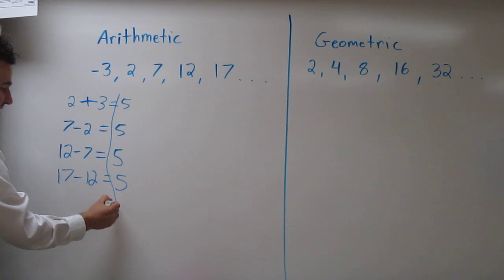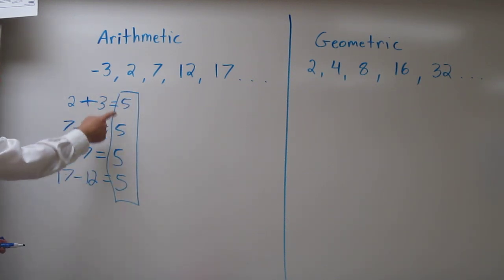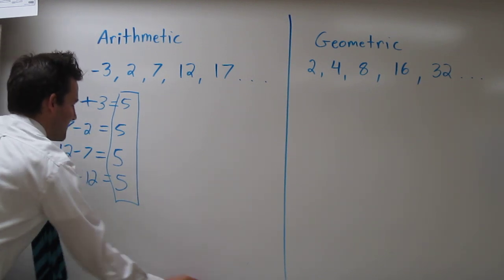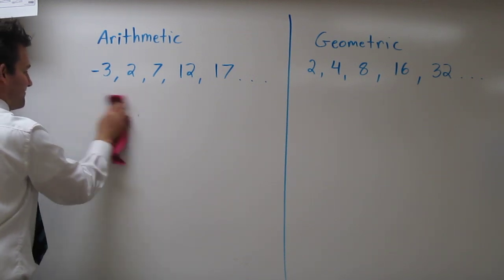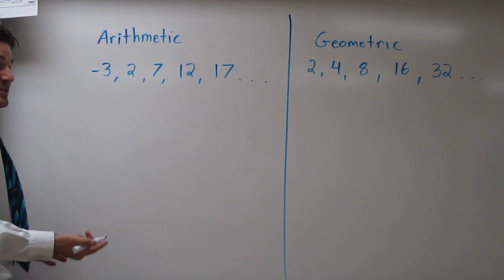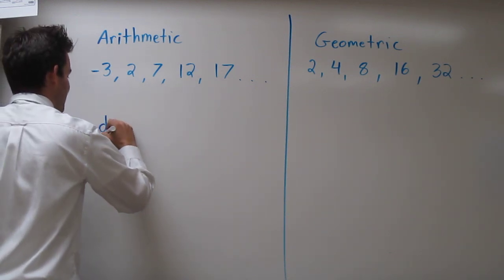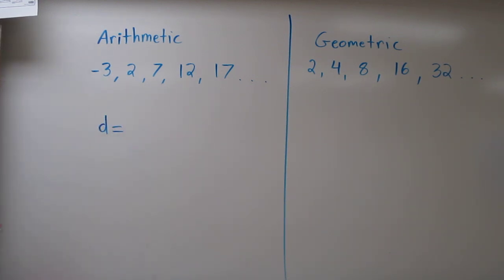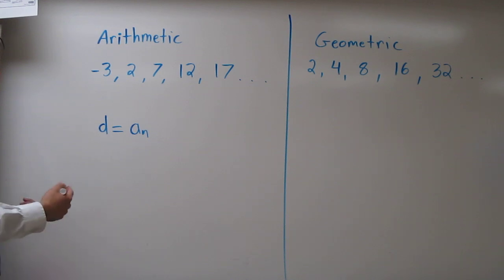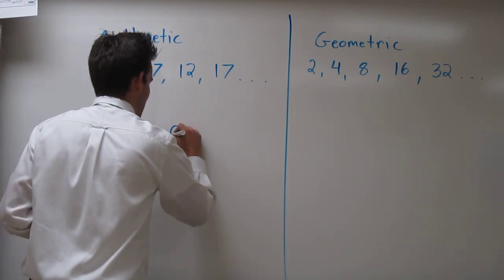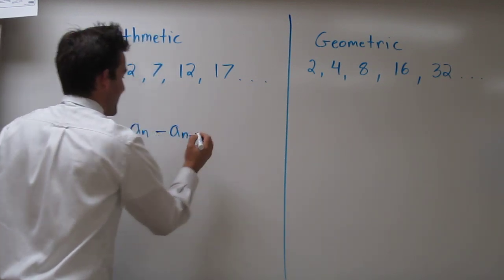Now notice the difference between a term and the previous term is constant. This is what makes an arithmetic sequence. So this constant difference can be denoted with a d. So the difference is d, the difference between the nth term and the term before it, which we denote with a sub n minus 1.